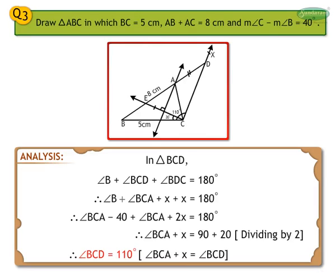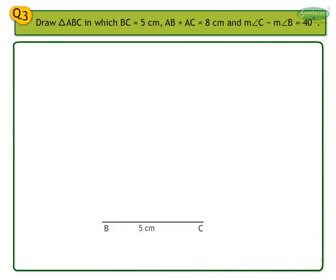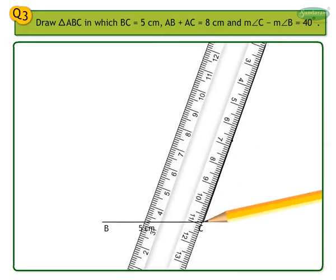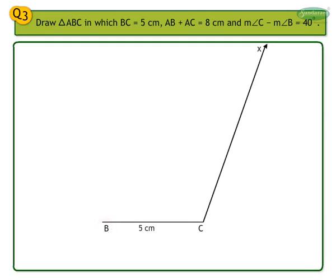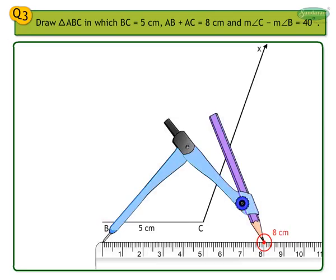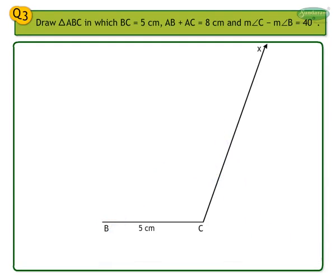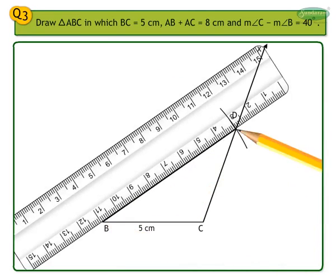Let us see the steps of construction. First, draw segment BC of length 5 cm. Take C as center. Draw ray CX such that measure angle BCX equals 90 degrees plus half of (angle C minus angle B). That is, measure angle BCX equals 90 plus 40 divided by 2, which gives measure angle BCX equals 110 degrees. Take B as center and radius 8 cm, that is AB plus AC, and draw an arc intersecting ray CX at point D. Join B and D.